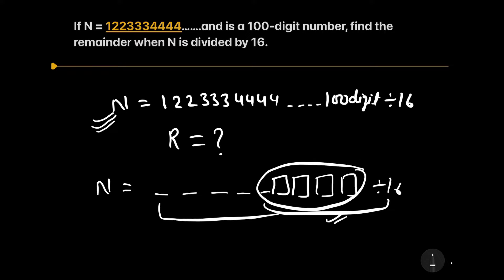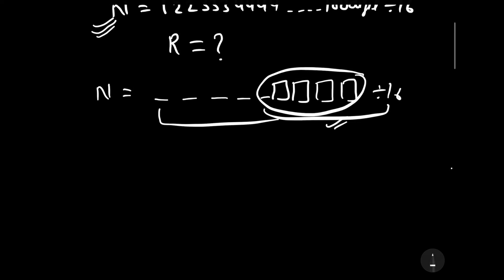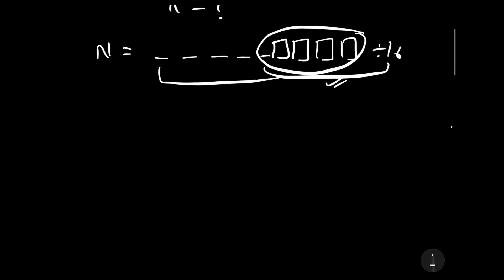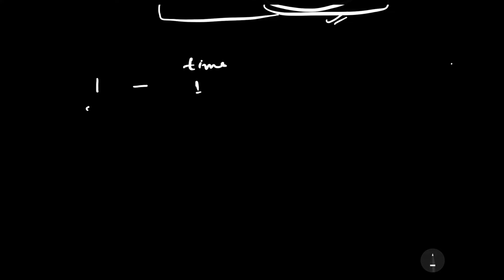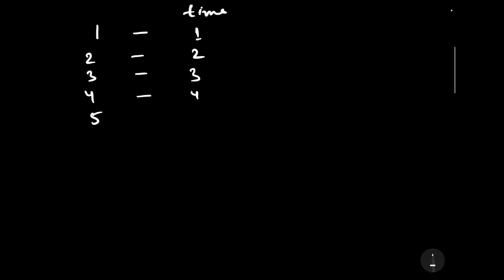To find the last 4 digits, we need to observe the pattern. What is the pattern? 1 is appearing 1 time, 2 is appearing 2 times, 3 is appearing 3 times — whatever the digit, it appears that many times. So 1 comes 1 time, 2 comes 2 times, 3 comes 3 times, 4 comes 4 times, 5 will come 5 times, 6 six times, 7 seven times, 8 eight times, 9 will come 9 times.